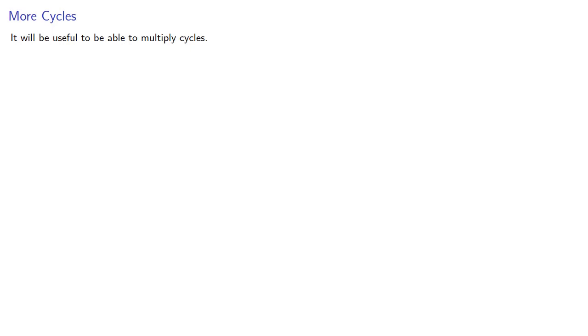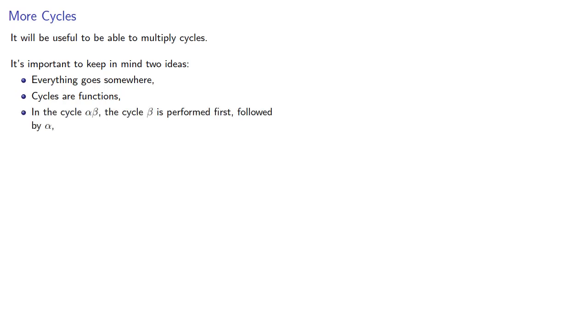It will be useful to be able to multiply cycles. It's important to keep in mind two ideas. Everything goes somewhere, cycles are functions, and importantly, in the cycle alpha beta, the cycle beta is performed first, followed by alpha.